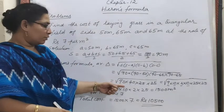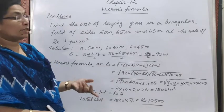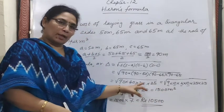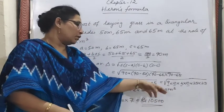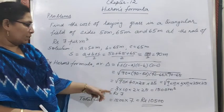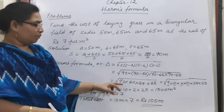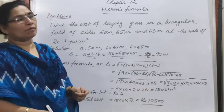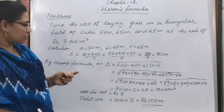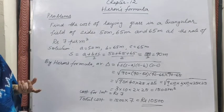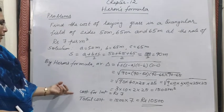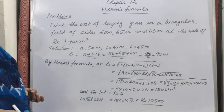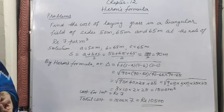Factorizing: 90 = 9×10 and 40 = 4×10. Finding pairs under the root gives 3 × 10 × 2 × 25 = 1500 m² as the area. Since cost for 1 m² is ₹7, total cost = 1500 × 7 = ₹10,500.